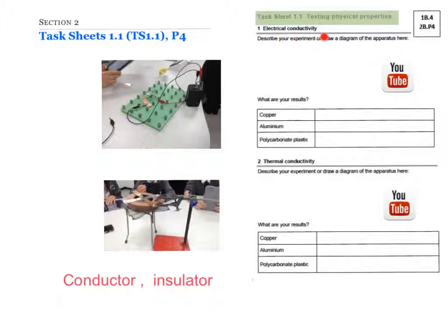Experiment 1 is electrical conductivity. You're testing copper, aluminium and polycarbonate plastic to see if they will light a bulb in the circuit. This is the circuit diagram. This is a bulb. This is a battery. The copper, aluminium and plastic we put in this gap. If the bulb lights up, then it's a conductor. If there's no light for the bulb, then it's an insulator.